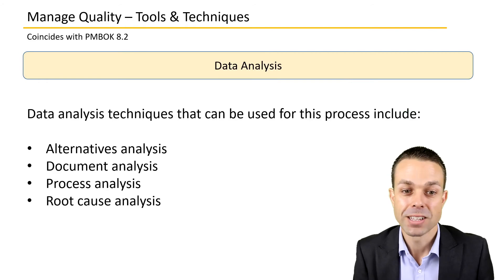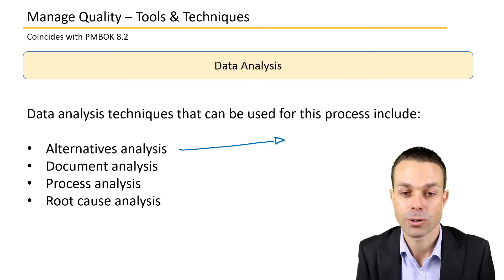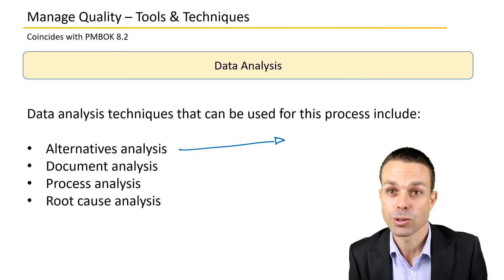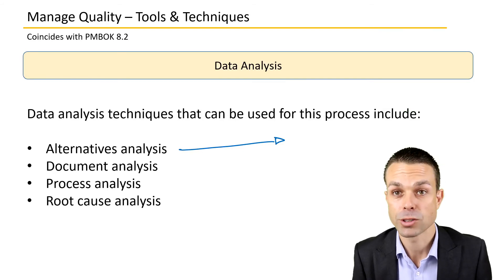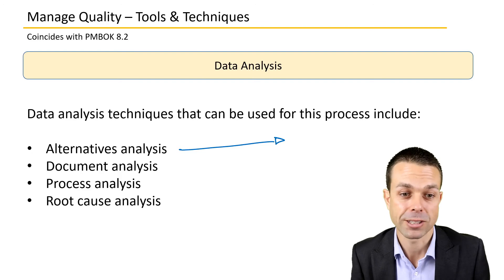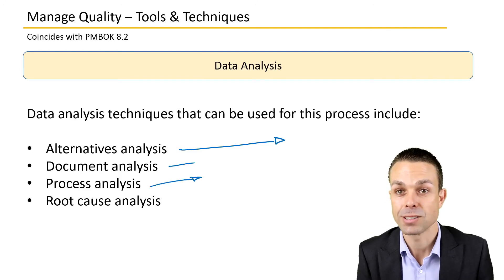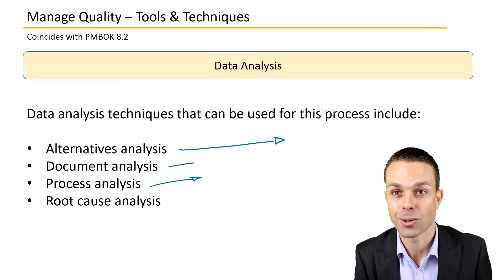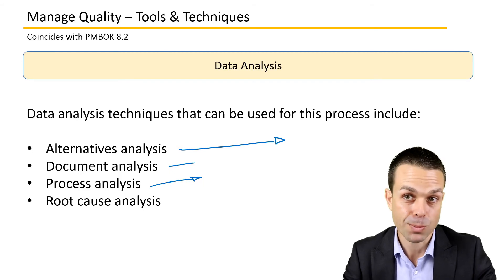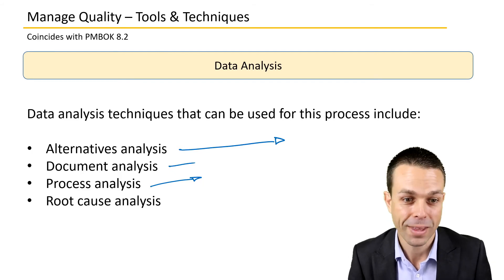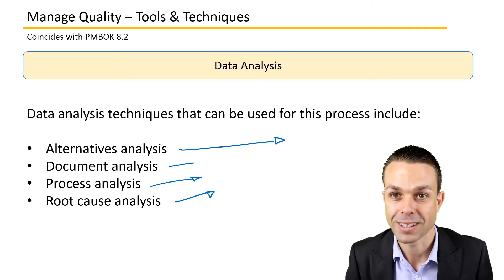Data analysis includes looking at different alternative solutions to things that go wrong, or different alternatives for scope if changes are needed. Document analysis and process analysis check whether the process we're going through and the deliverables are correct. Root cause analysis is applied to any problems that arise.